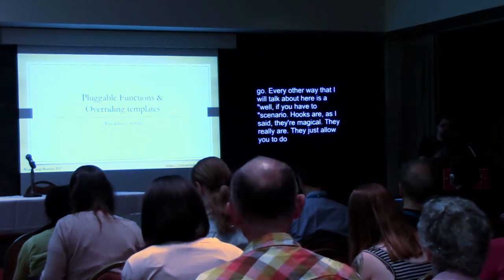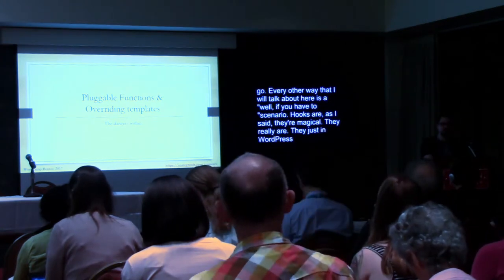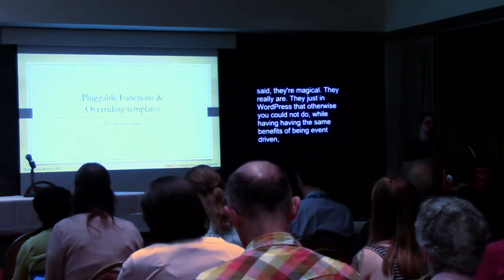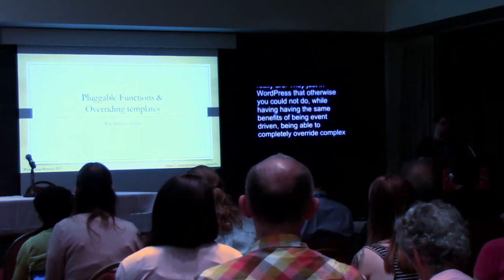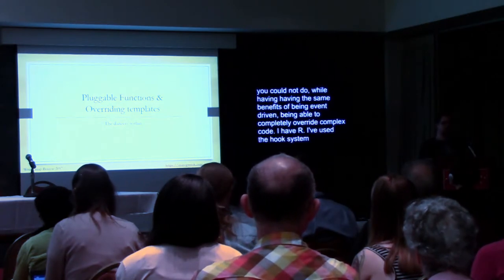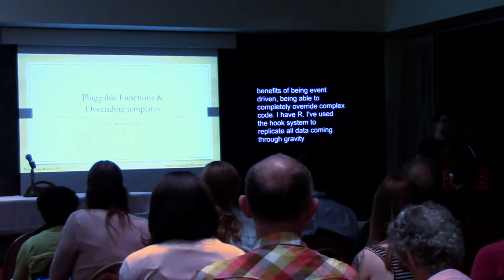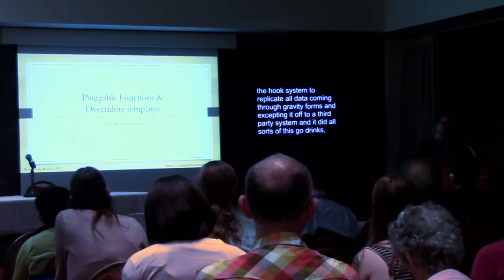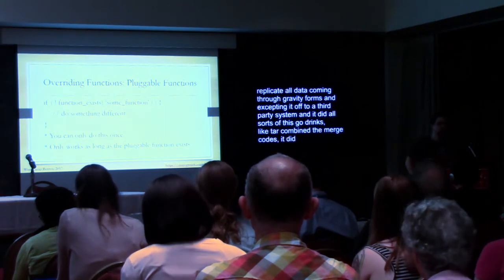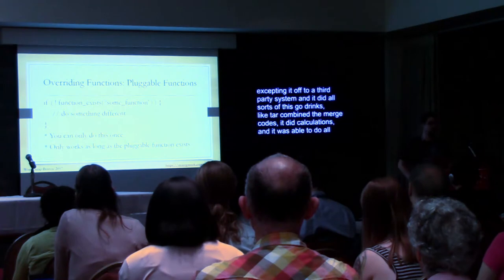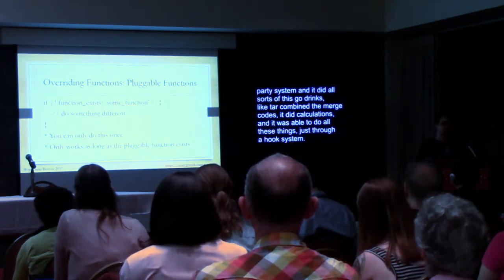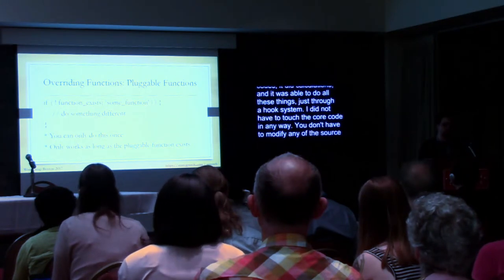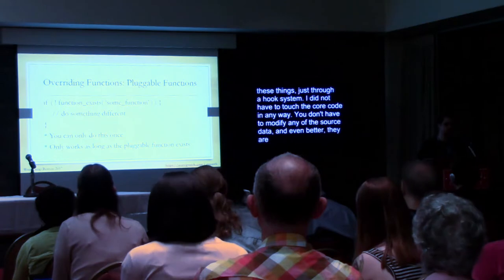The next approach is pluggable functions and overriding templates. Pluggable functions have existed since WordPress 1.5 — they're fairly old, but you want to avoid them whenever possible. They can be handy when there are no hooks to do what you want, or the function does something completely different from what you need. Using `if function_exists` wrapping, you can override the function.